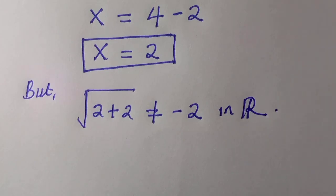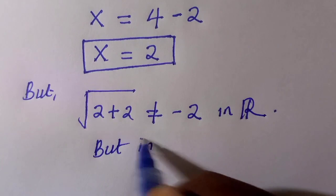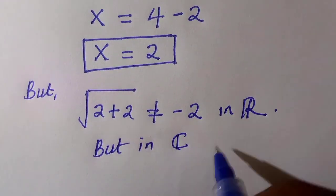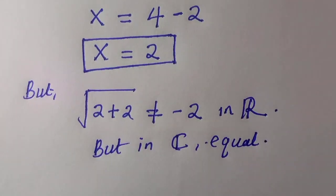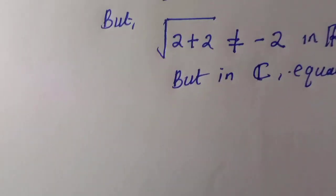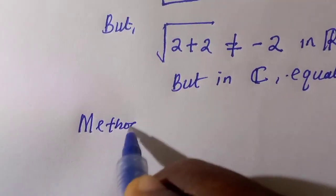But in the complex space, they are equal. That is, we have x equals 2, which is equal in a complex space. So we'll consider this as the first step.